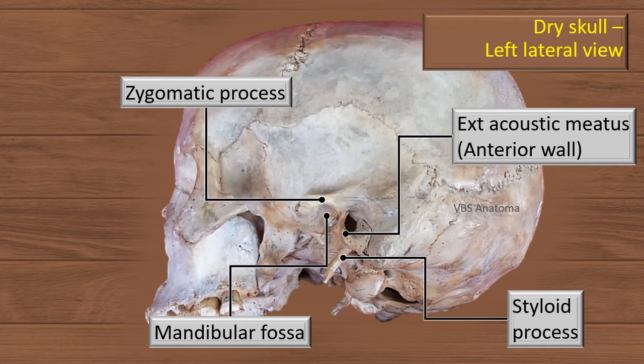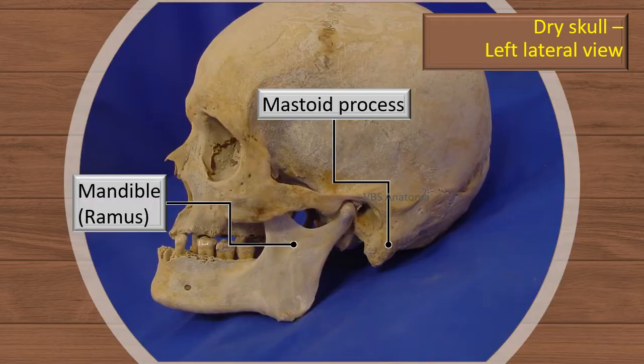The styloid process is an important deep relation. In fact, the styloid apparatus — consisting of the styloid process, the ligaments attached to it, and the muscles attached to it — are all deep to the parotid gland. Next is another left lateral view of a dry skull with the mandible in position. The previous view had the mandible removed to show the deeper structures, particularly the styloid, in greater detail, but in reality the mandible is there and therefore the mandibular fossa is occupied.